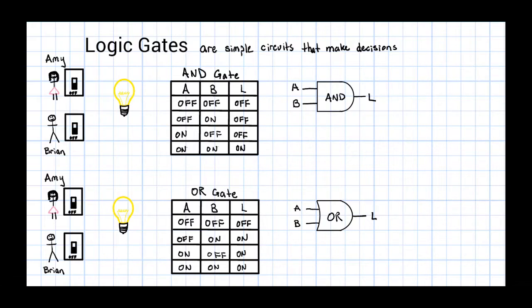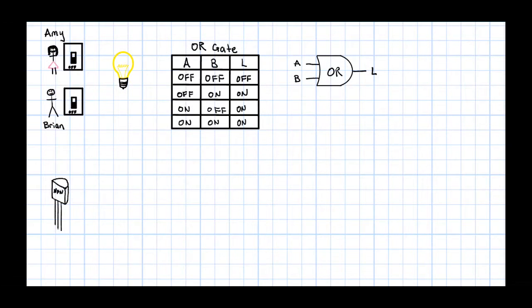As you may have guessed, there aren't little Amy and Brians running around inside all your electronic devices. That is where transistors come into play. Transistors are like little light switches. When you apply an electric current, the switch is on. When there is no electric current, the switch is off.